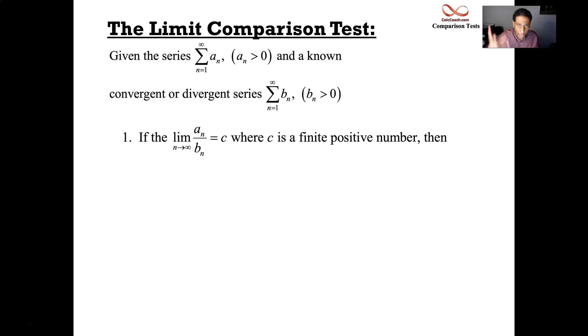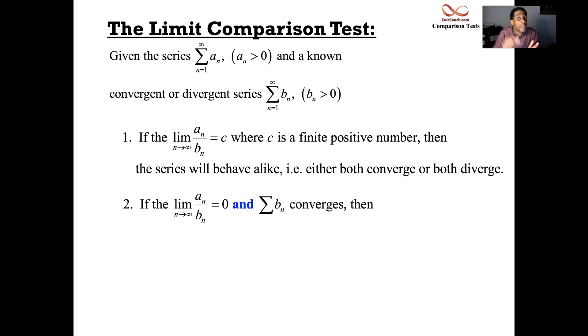And so if that's a finite positive constant, then we can be sure that the two series will behave alike. So whatever the b sub n series does, that is going to be what your a sub n series will do. If this limit as n goes to infinity on the ratio of these two sequences is zero, then that fact needs to be paired up with the fact that your b sub n series that you went out and got is convergent. These two facts together would lead to the fact that yes, your a sub n given series also is convergent.